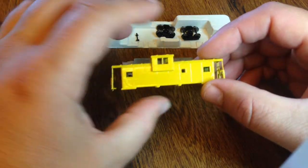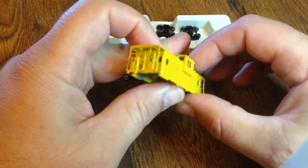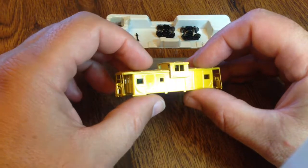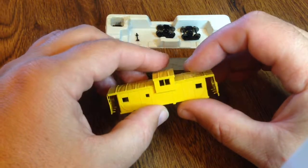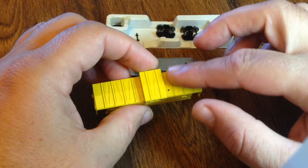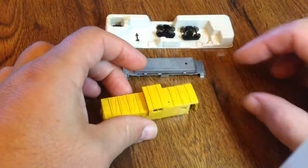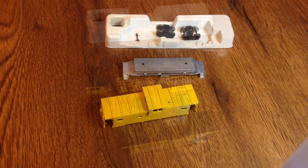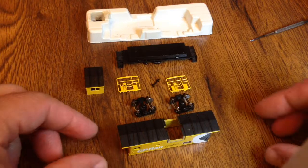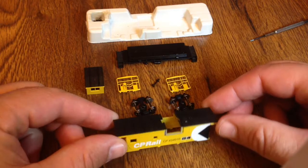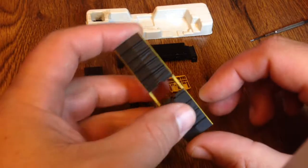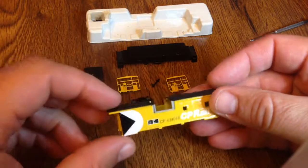I just happened to have some CP Rail decals lying around. I could do a Union Pacific as well. I also have to paint the roof black. Everything's back with the decals and the black painted roof, so I'm ready to reassemble everything together now.